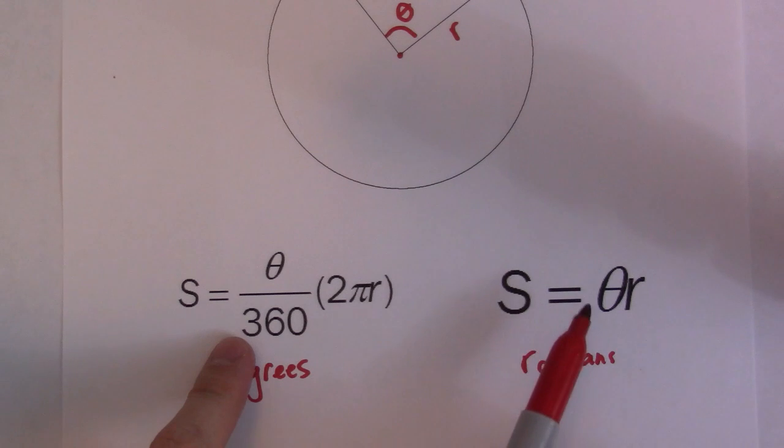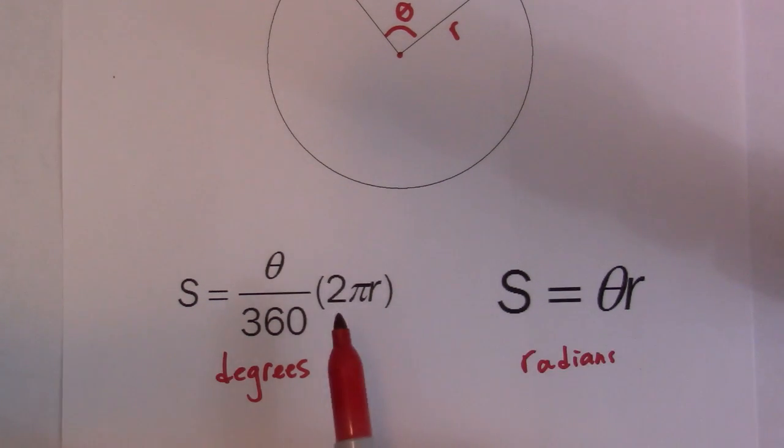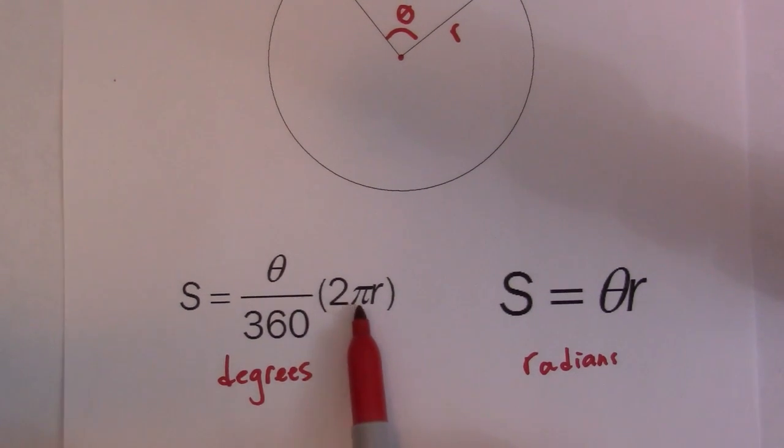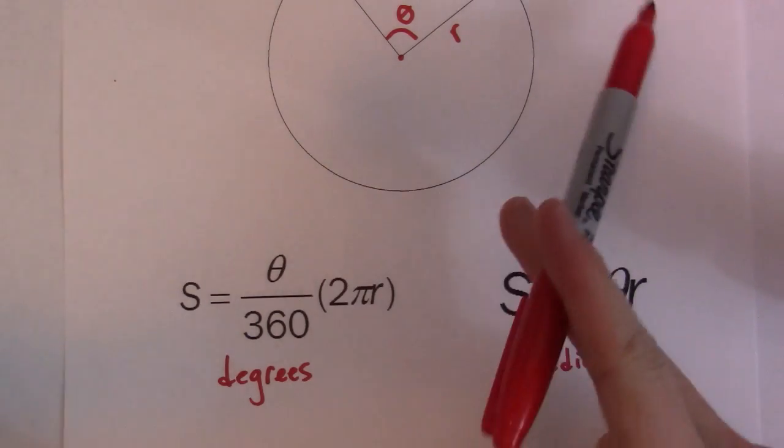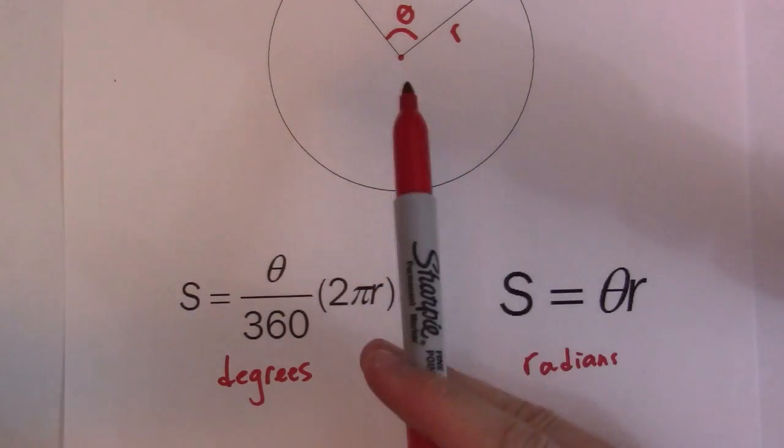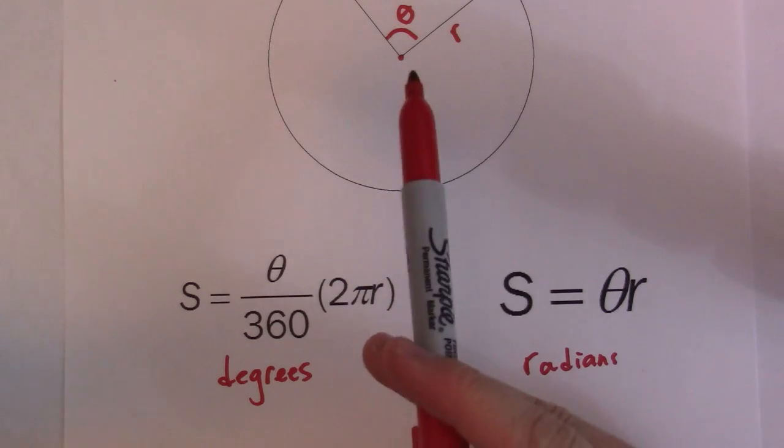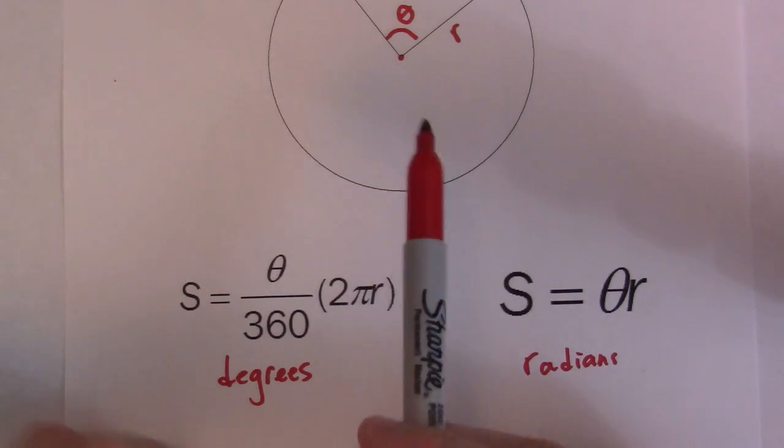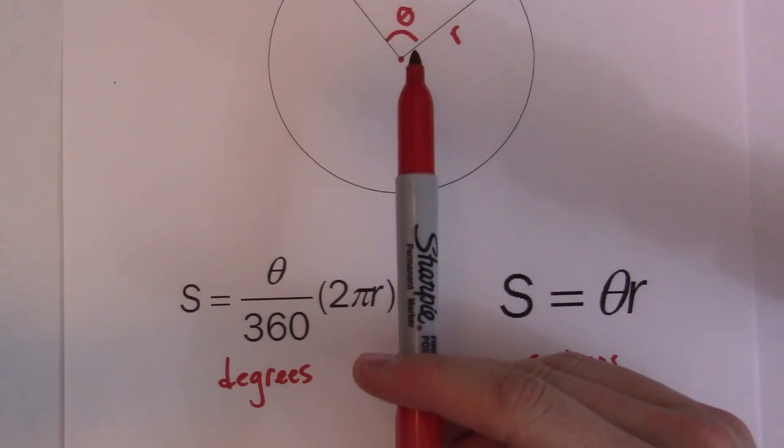And then this formula in radians is just theta times r. So one of the things that you should recognize is that arc length is literally a length. So there's another thing called measure of the arc, which is given in angle measure. So be careful not to mix up the two. Arc length is given in a unit of measurement like centimeters, meters, feet, whatever it happens to be.